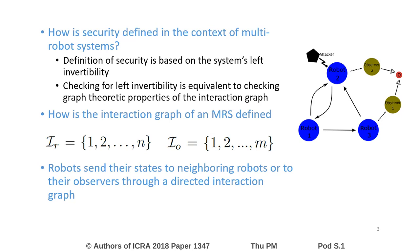In a multi-robot system, left invertibility is equivalent to checking graph theoretic properties of the interaction graph. The interaction graph is used to represent robots, observers, and their communication and interactions. A simplified interaction graph is shown to the right with an added node O. A path to O is equivalent to having a path to some observer — this node is added for theoretical convenience.